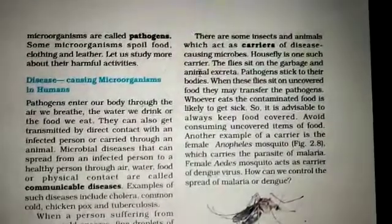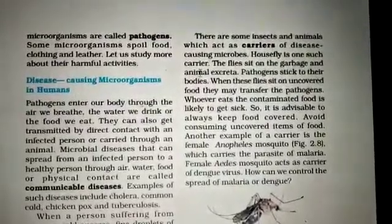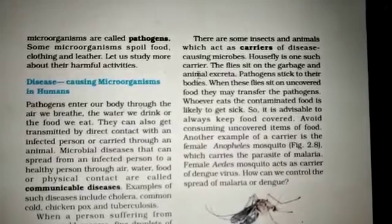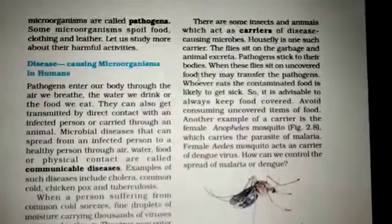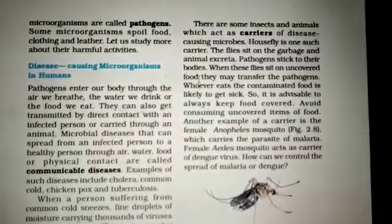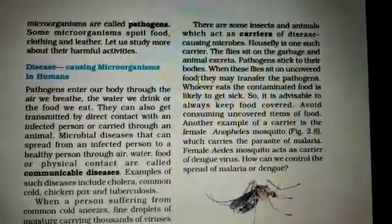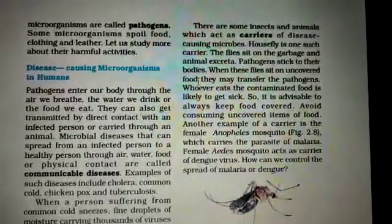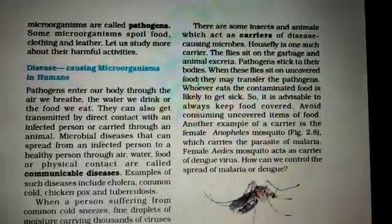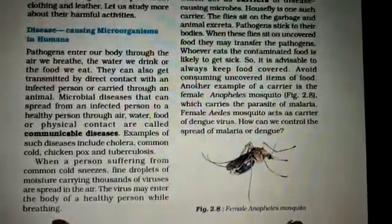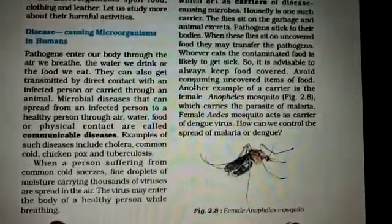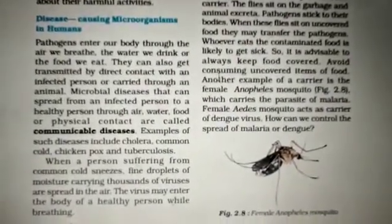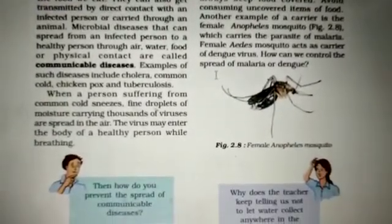It is very dangerous and easily spreads from person to person. Some microorganisms also spoil food, clothing, and leather. Pathogens enter our body through the air we breathe, the water we drink, and the food we eat. They can also be transmitted by direct contact with an infected person or carried through an animal. Microbial diseases that spread from an infected person to a healthy person through air, water, food, or physical contact are called communicable diseases. Examples include COVID-19, cholera, common cold, chicken pox, and tuberculosis.